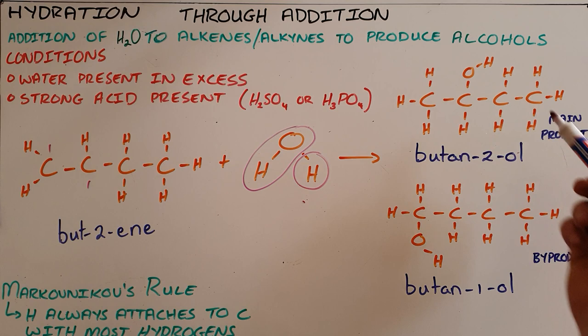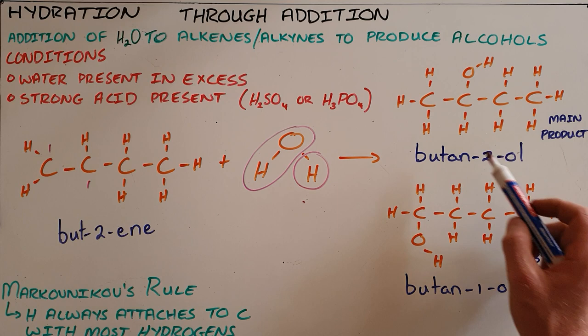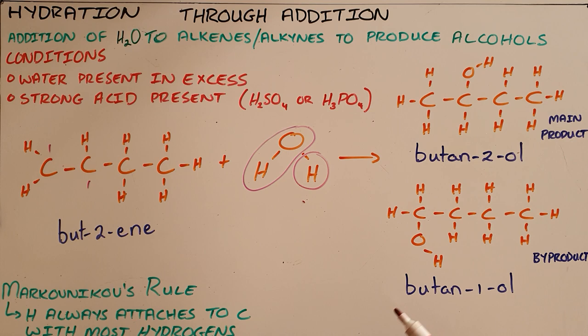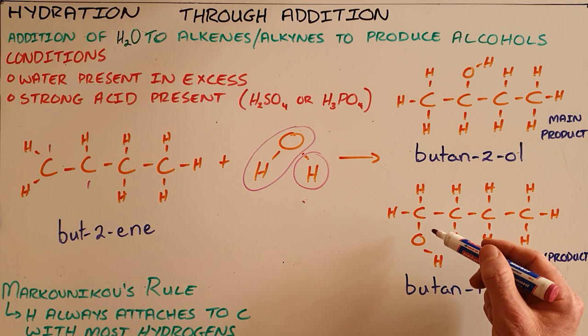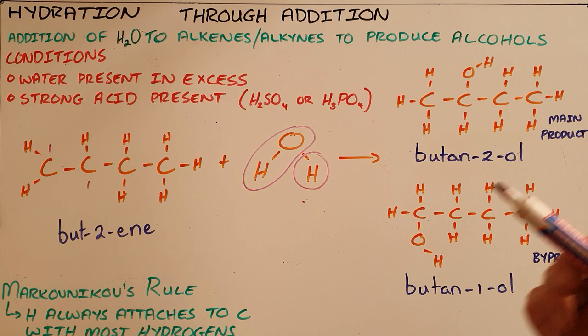Once again we have two possible products. The first product here being butan-2-ol where the hydrogen has attached to the first carbon and the hydroxyl group has attached to the second carbon. The other product possible being butan-1-ol where the hydroxyl is attached to the first carbon and the hydrogen attached to the second carbon.